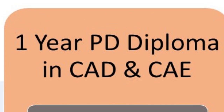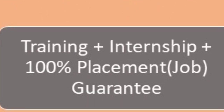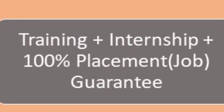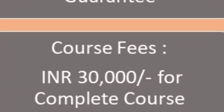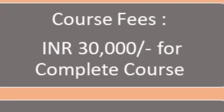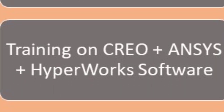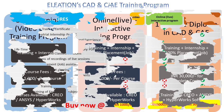The third mode is the one-year post-graduation diploma in CAD and CAE, which includes complete training and internship on design and simulation software with 100% placement guarantee. The course fees for Eleation's one-year post-graduation diploma in CAD and CAE is rupees 30,000 for the complete course. In the one-year PG diploma, you will learn all three softwares — Creo, Ansys, and HyperWorks.